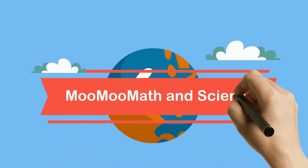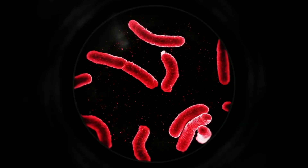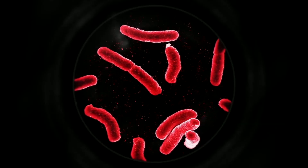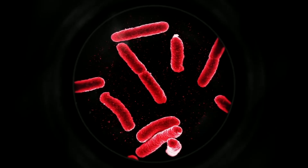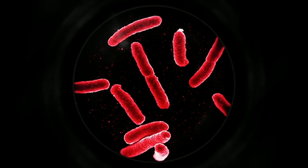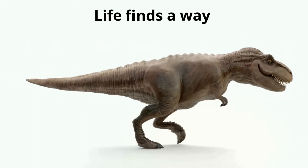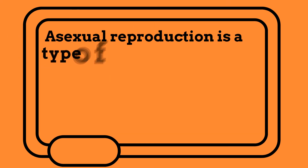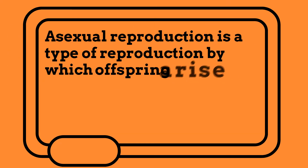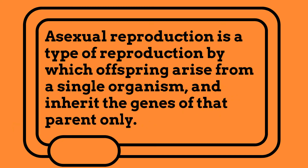Welcome to Moo Moo Math and Science and Asexual Reproduction. Asexual reproduction is just one way of how life is able to make copies of itself and continue to stay alive. Or as Dr. Malcolm says from Jurassic Park, life finds a way. Asexual reproduction is a type of reproduction by which offspring arise from a single organism and inherit the genes of that parent only.